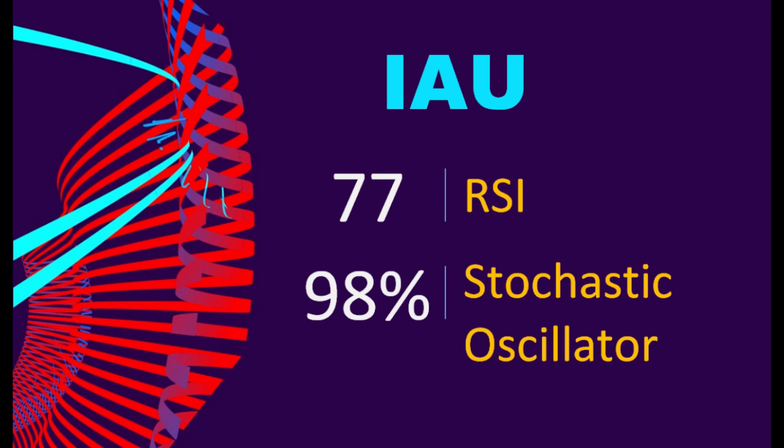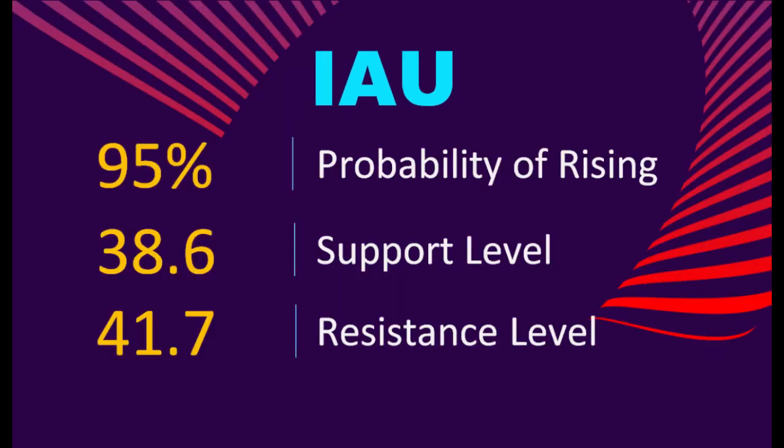The current stochastic oscillator of IAU is 98%. When the stochastic oscillator rises above the 80 level, it is usually considered overbought, indicating that the stock may be due for a price pullback. An overbought condition occurs when a stock's price rises too fast and too high in a short period of time, and can be a sign that buying pressure has exhausted. Trend Outlook: The probability of IAU share price rising is 95%. Combining multiple technical analysis indicators, IAU has six bullish signals and two bearish signals.